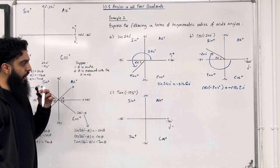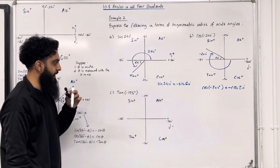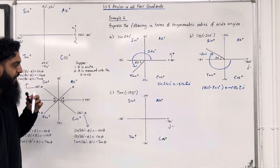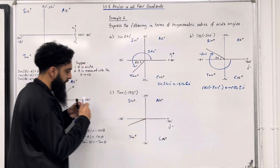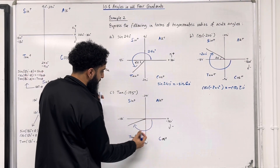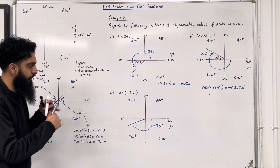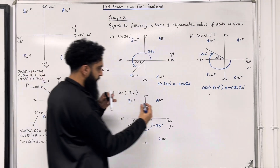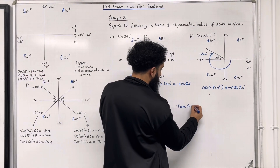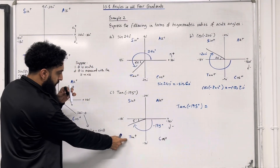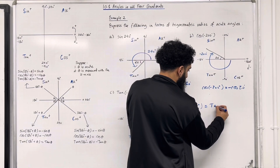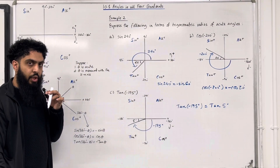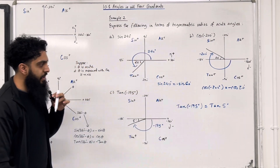Part C: tan of minus 175 degrees. Starting from the positive x-axis at 0 degrees, going clockwise to draw minus 175 degrees — the angle lands somewhere here. The acute angle created with the x-axis is 5 degrees. In this quadrant tan is positive, so tan of minus 175 degrees equals tan of 5 degrees. That completes example 2.